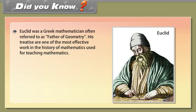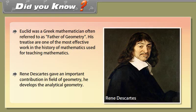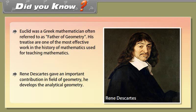Euclid was a Greek mathematician often referred to as the father of geometry. His work is one of the most influential in the history of mathematics and has been used for teaching mathematics. René Descartes made an important contribution to the field of geometry by developing analytical geometry.